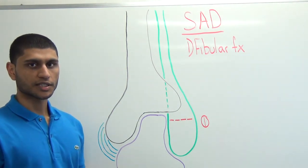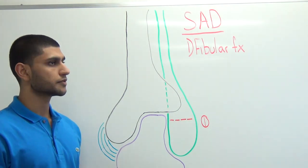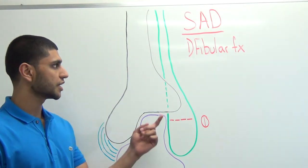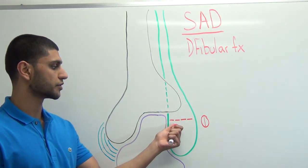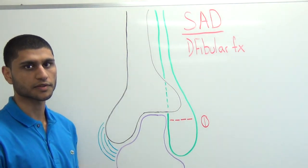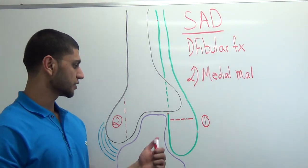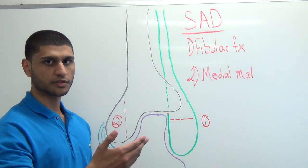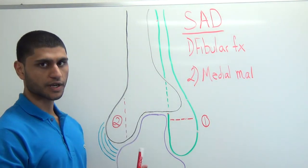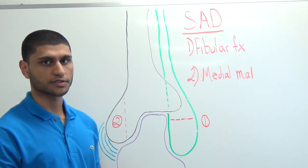Finally, we'll end with SAD — supination adduction — in which the mechanism of injury is inversion of the talus. There are only two stages. In SAD1, we see a transverse fibular fracture slightly below the level of the ankle joint, making this a Danis-Weber A. In SAD2, as the talus continues to invert, it moves up dorsally and medially, causing an intra-articular vertical fracture of the medial malleolus. And that completes the four main classifications of Lauge-Hansen.